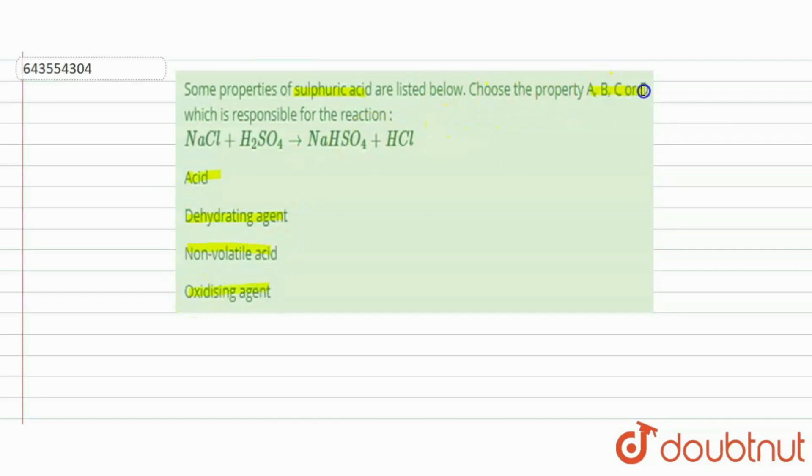We have to choose the property A, B, C or D which is responsible for the reaction given. That is NaCl plus H2SO4 produces NaHSO4 plus HCl.